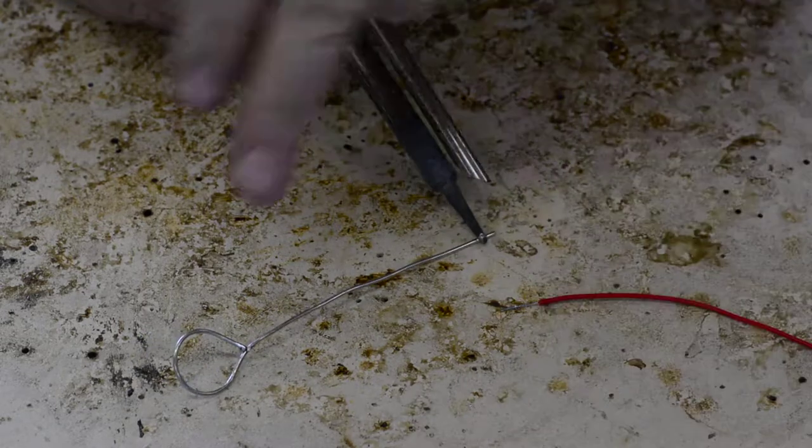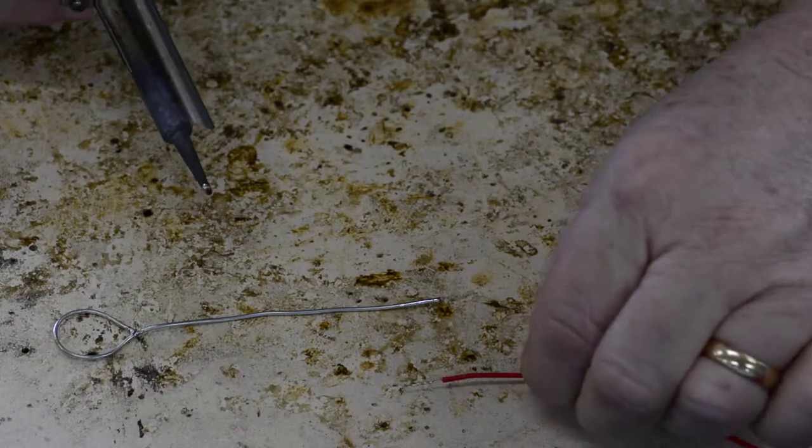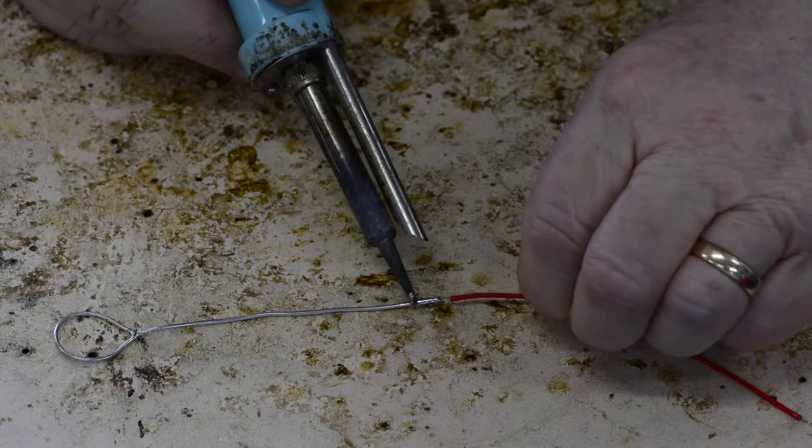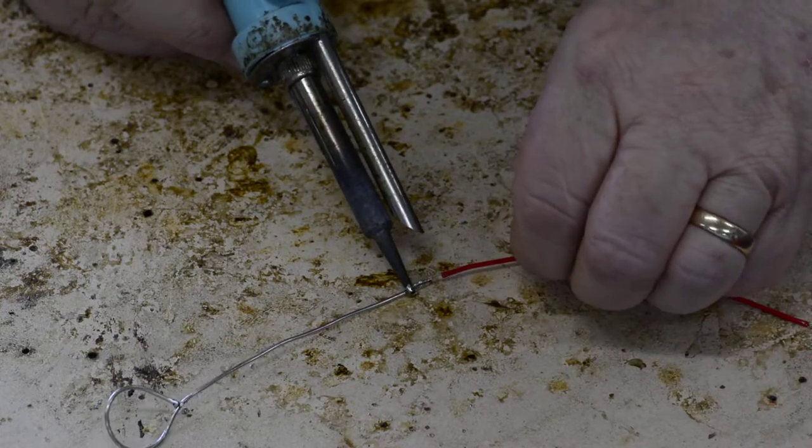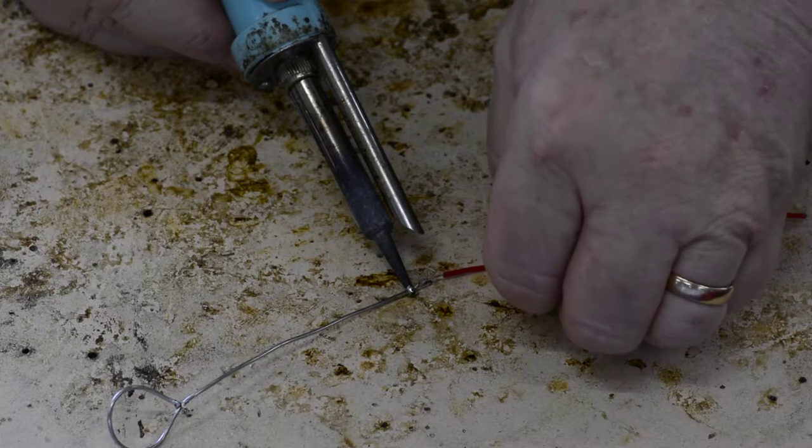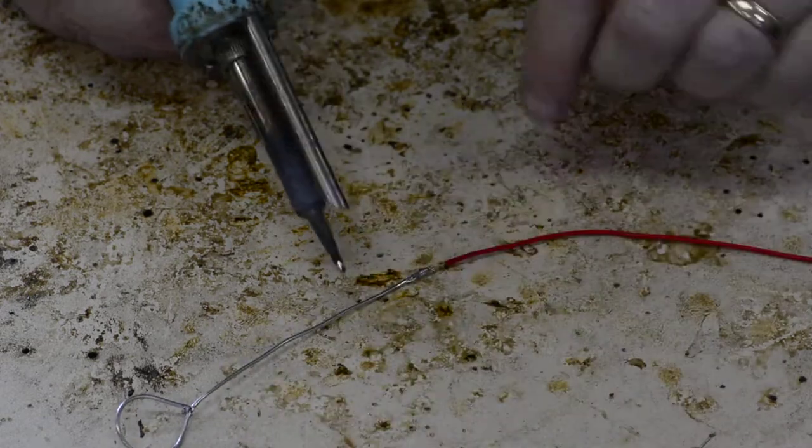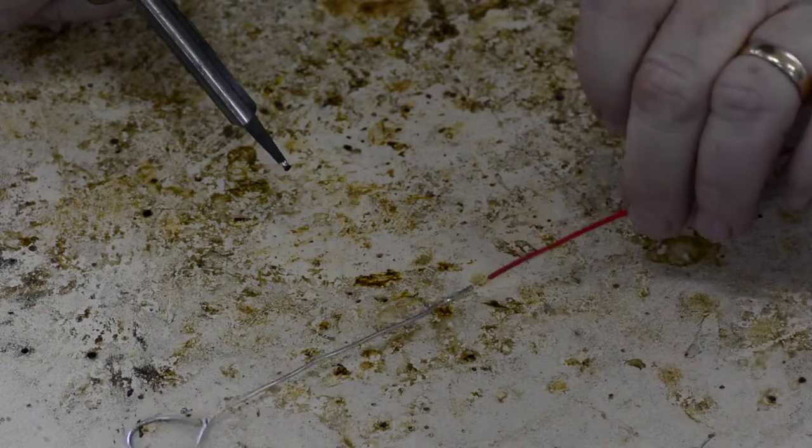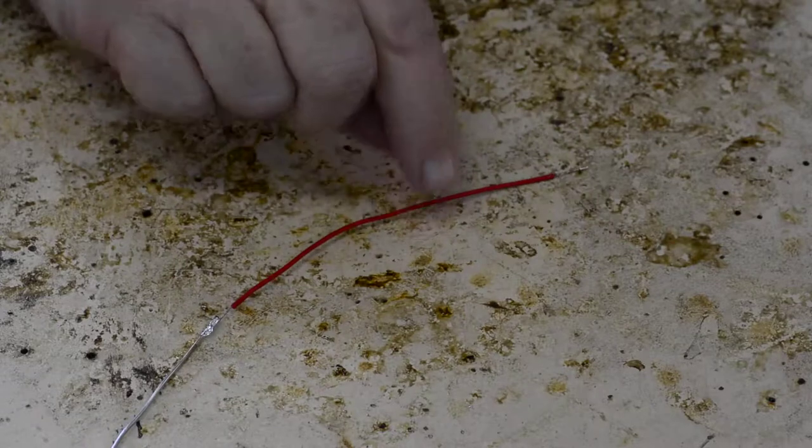And then run it down the wire. Then you'll take your tinned wire, put it on top, and we should be able to just join these two by holding it there. Take it away. So now you've got your wire joined to your loop.